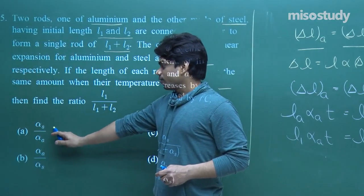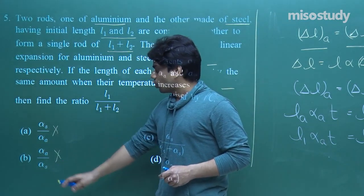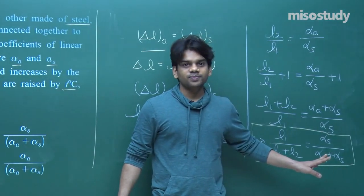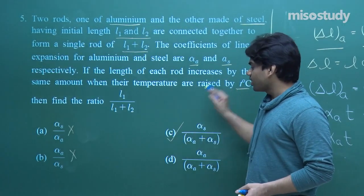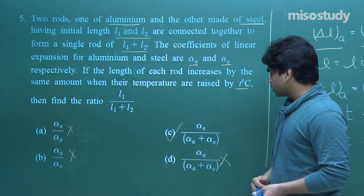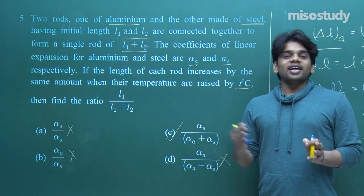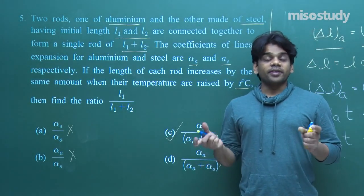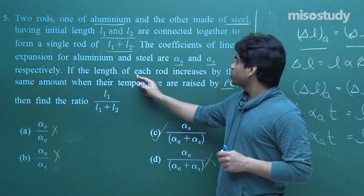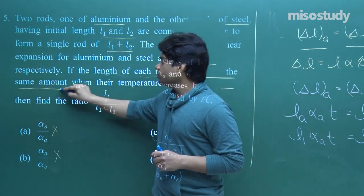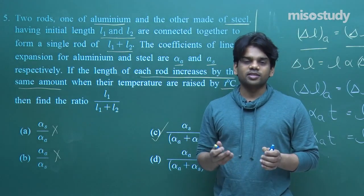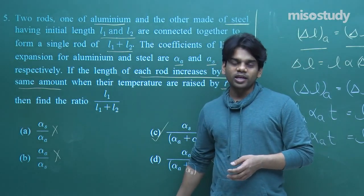Checking the options: A) alpha_S/alpha_A — no. B) alpha_A/alpha_S — no. C) alpha_S/(alpha_A + alpha_S) — yes, that is the right answer. D) alpha_A/(alpha_A + alpha_S) — no. You cannot reach the answer directly; you must convert the ratio. The key condition hidden in the question is that each rod increases by the same amount when temperature rises by T°C, so use delta_L_1 equals delta_L_2.